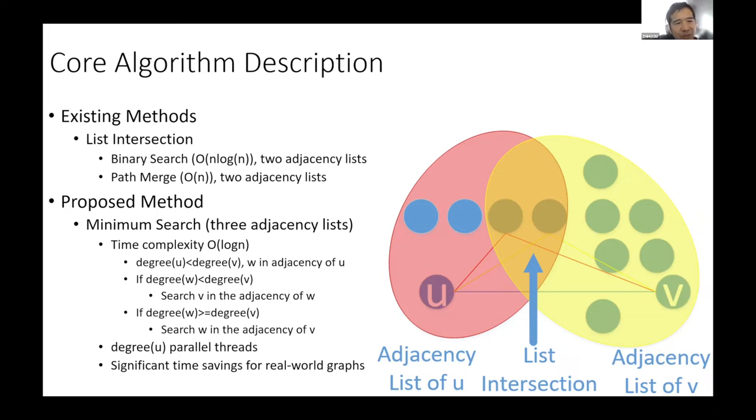For our method, the proposed minimum search-based method, the major difference is that first, we are a parallel method. We are searching the triangles in parallel. Second, we use three adjacency lists instead of two to reduce the total number of comparison operations.